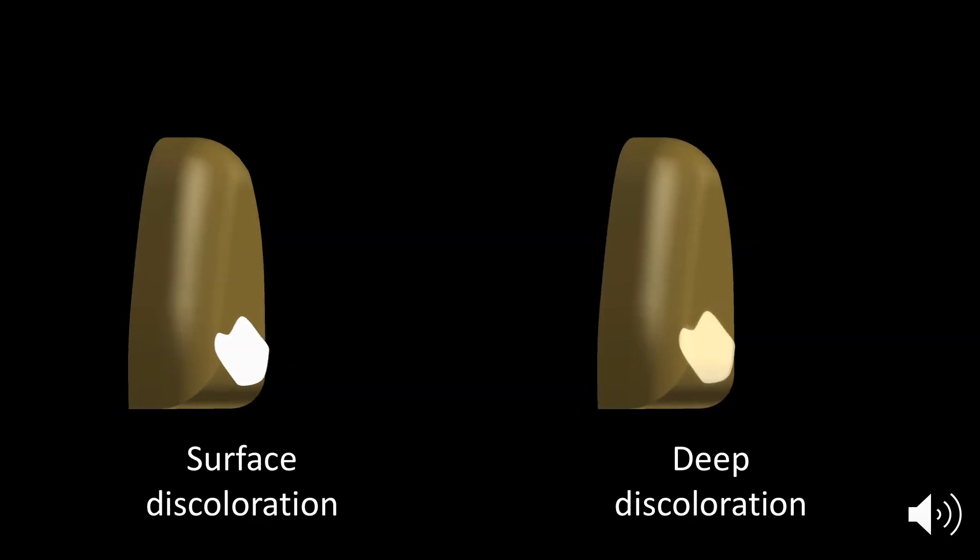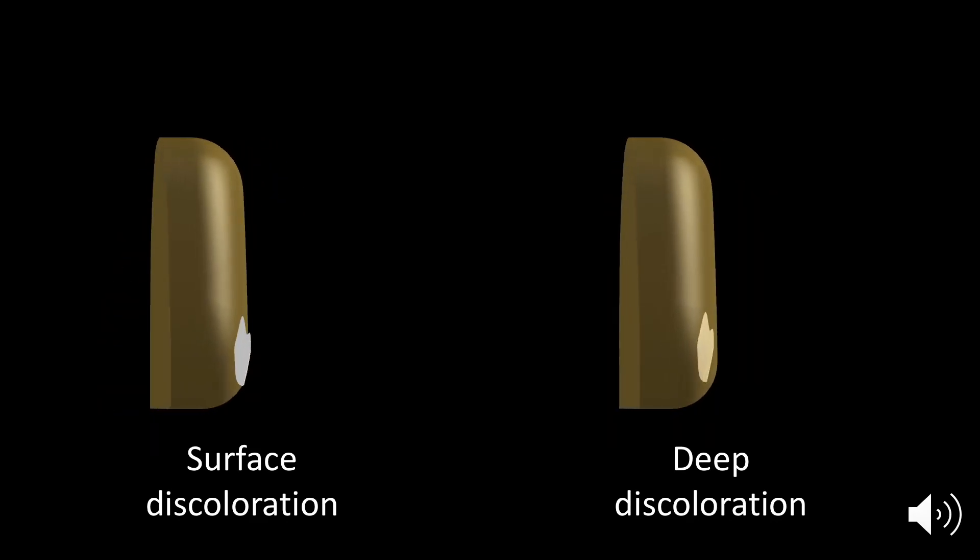If the tooth is viewed from its side, surface lesions will show a sharp, opaque edge, whereas deeper lesions will show a translucent, murky edge.